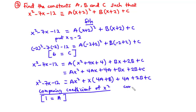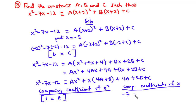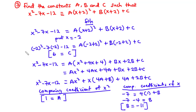Comparing coefficients of x: the left side has −7, and the right side has 4a + b. With a = 1, we get 4(1) + b = −7, so b = −7 − 4 = −11. Therefore, a = 1, b = −11, and c = 6.